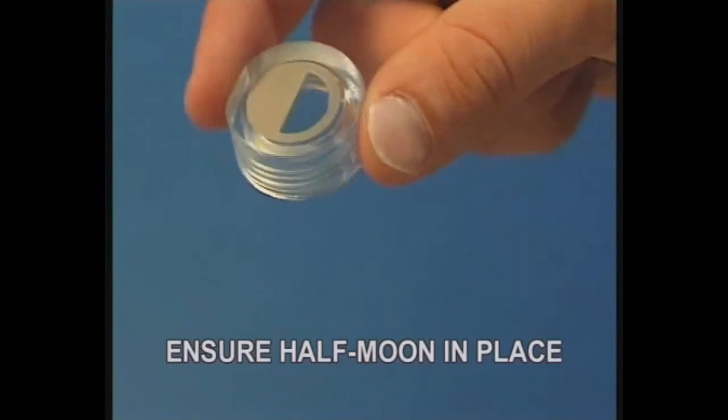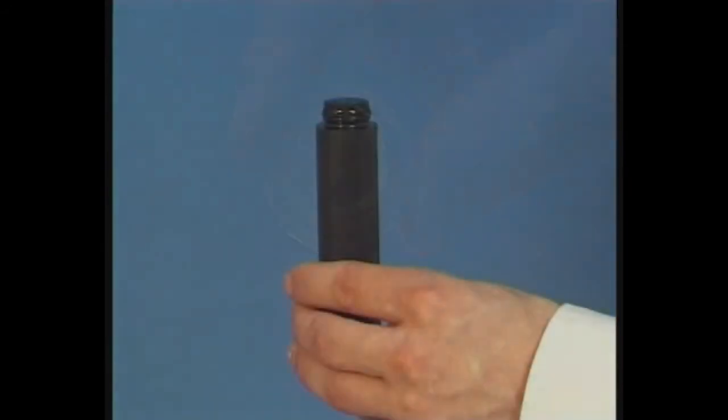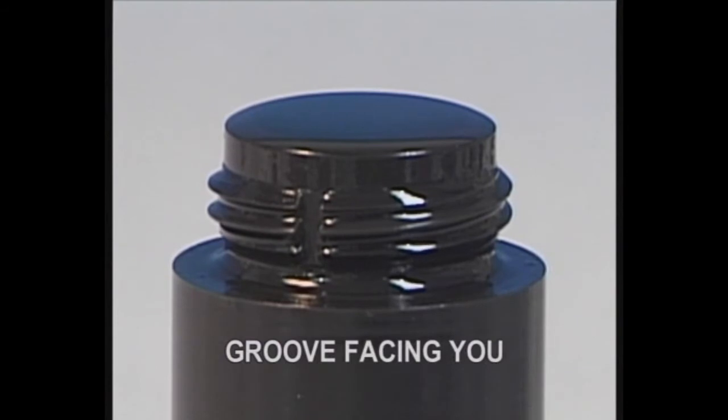Ensure the half moon sighting piece is placed in the end cap. Holding the tube in the vertical, observe the position of the groove in the thread and ensure this is facing you.